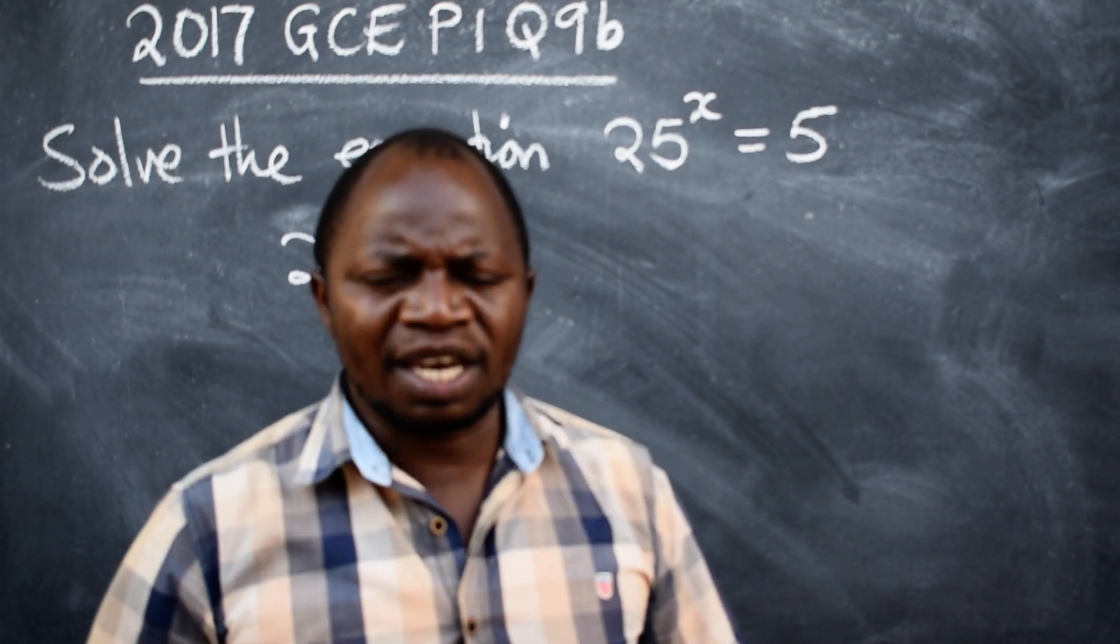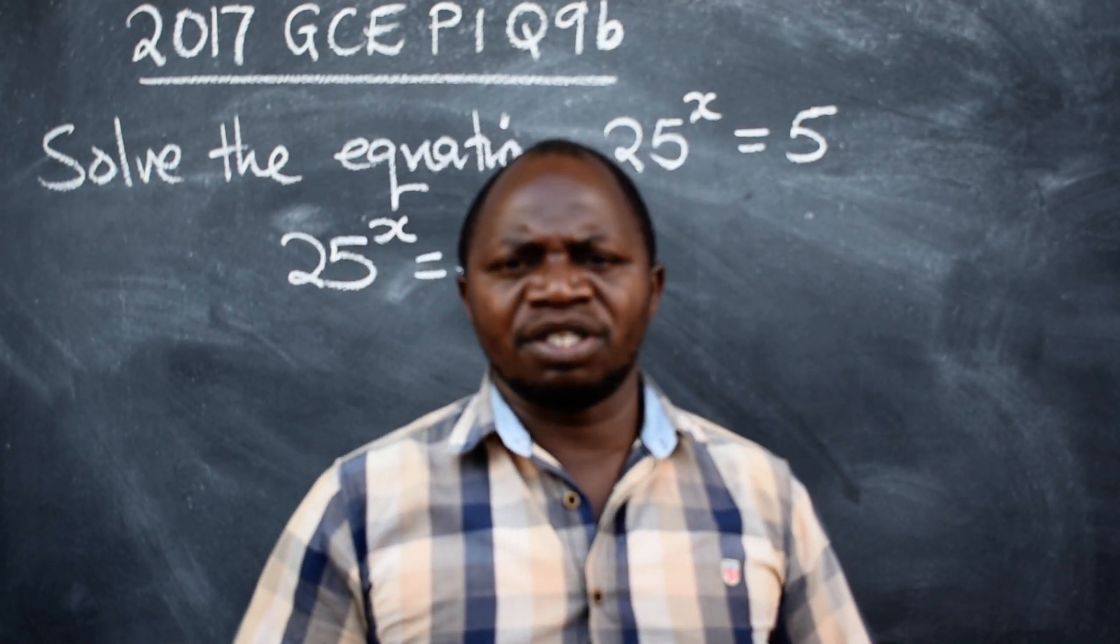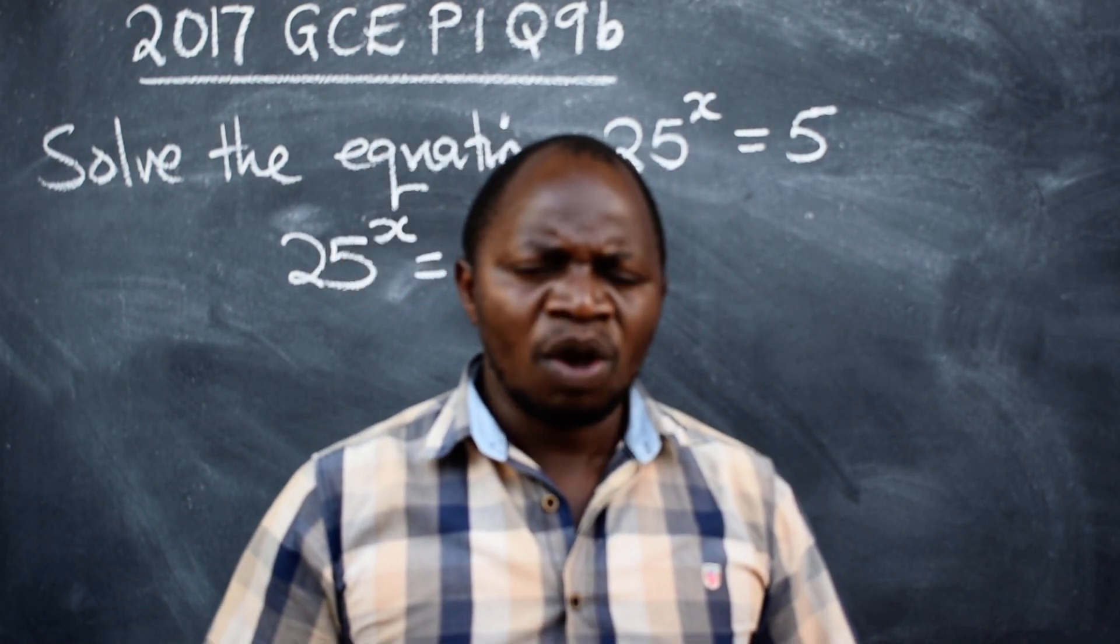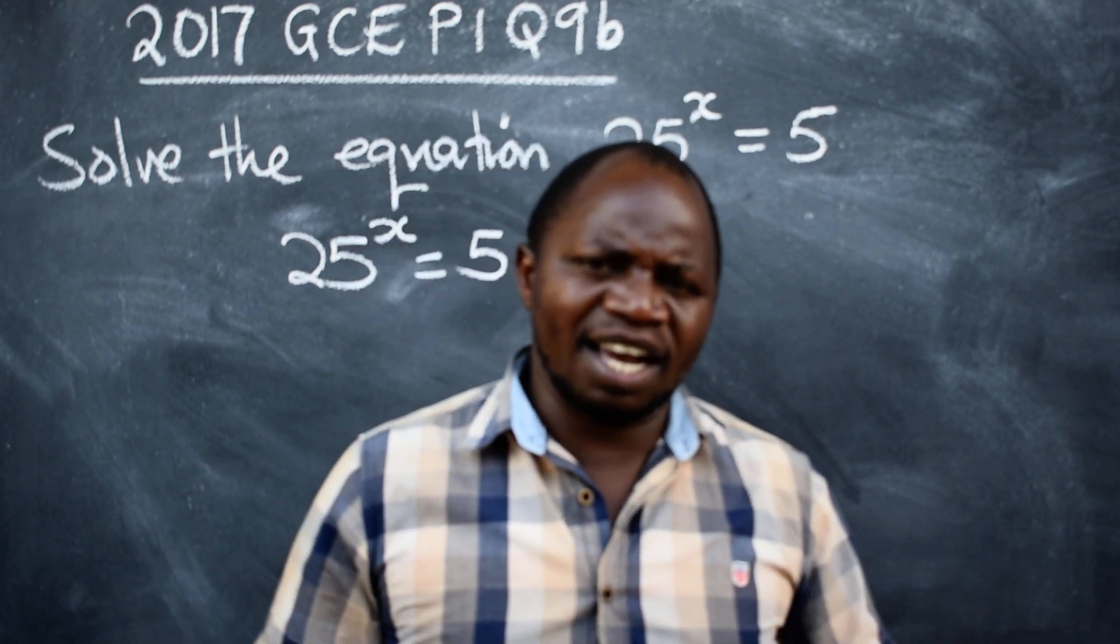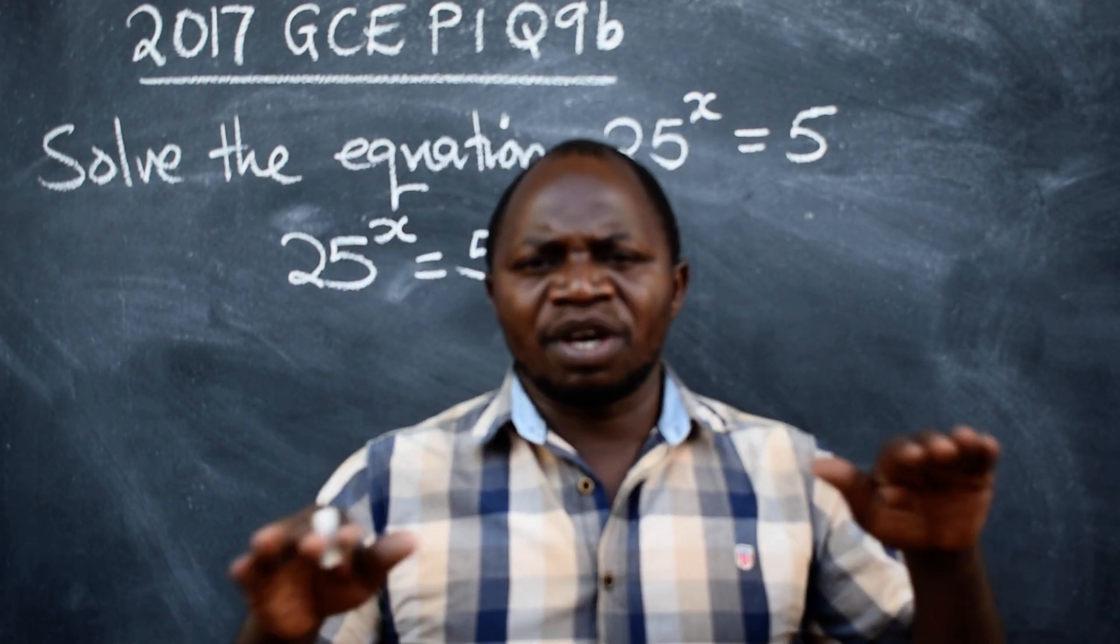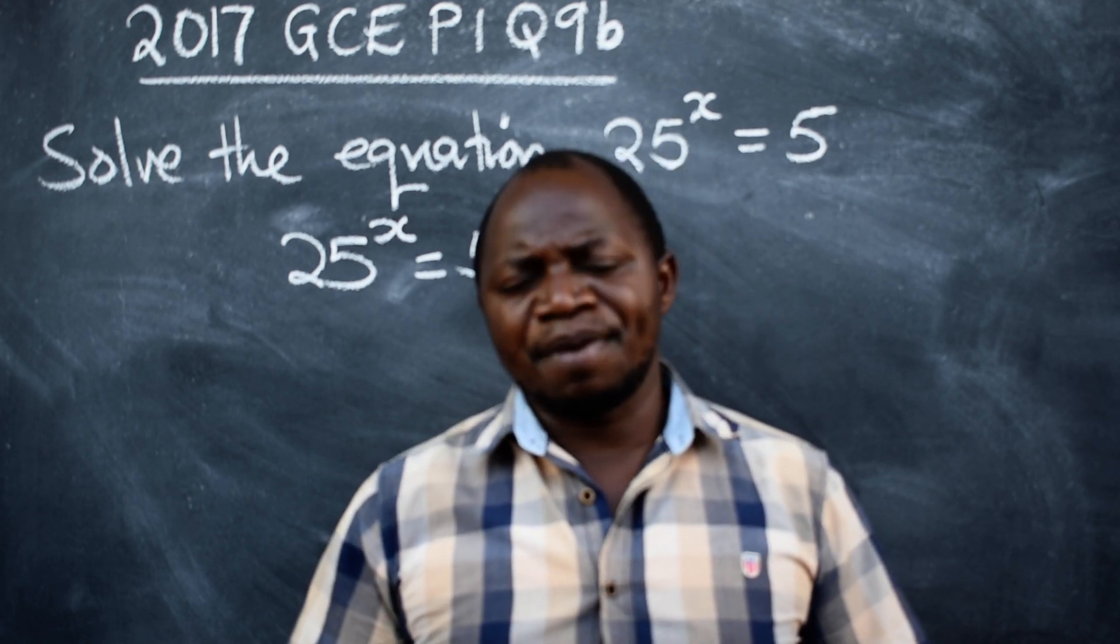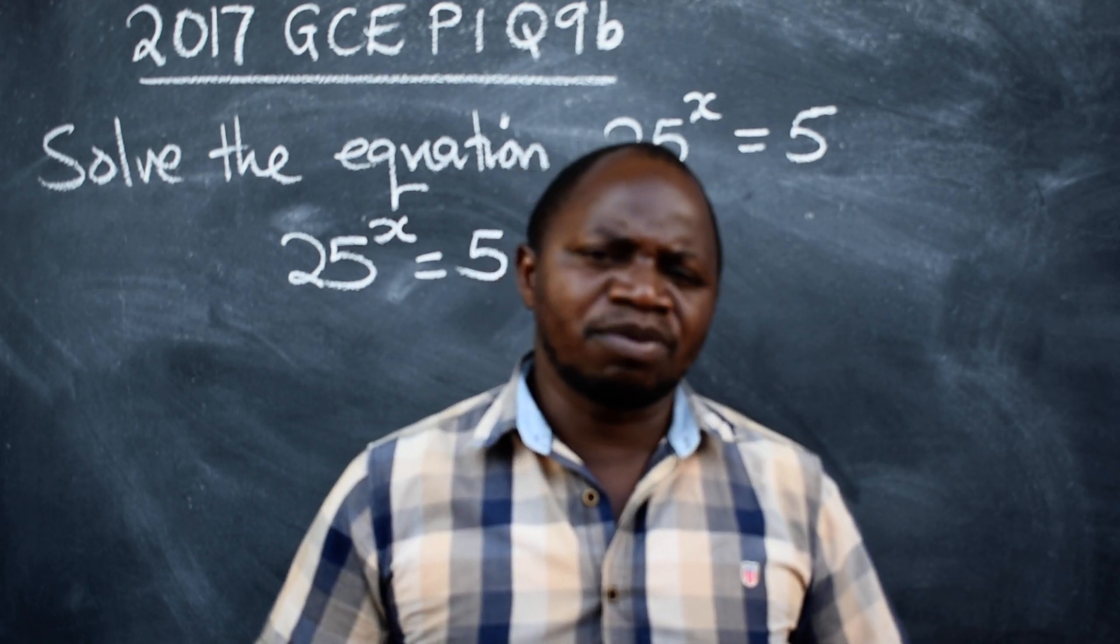Solving exponential equations can be done in many different ways. One is by making sure that the bases on both sides are equal, so that you can equate their powers. The other method is by substitution.